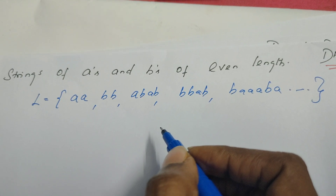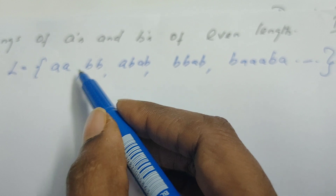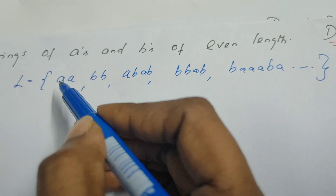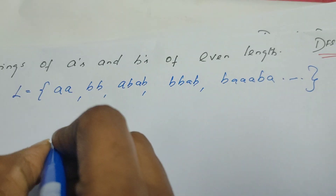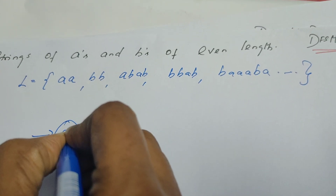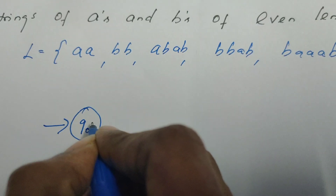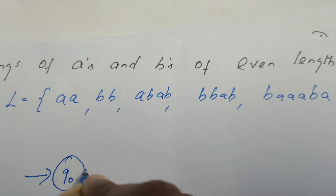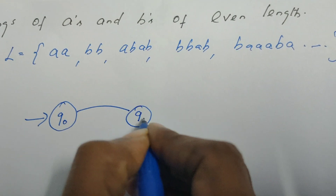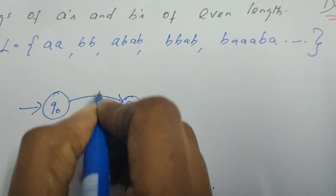In the previous video we saw problems which identify patterns, but now we are concerned about the length of the string. The length must be even — a multiple of two. The design is simple. Let the start state be Q0. In the initial state, the machine has not read any string, or we can assume it has read a string of length zero, which might be epsilon. From Q0, if we define a transition to another state Q1, it is possible to read a string of length one.